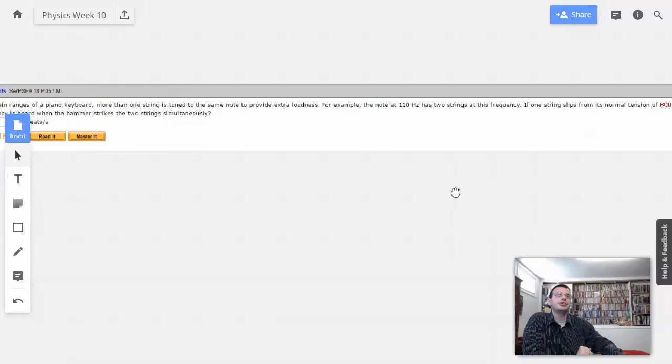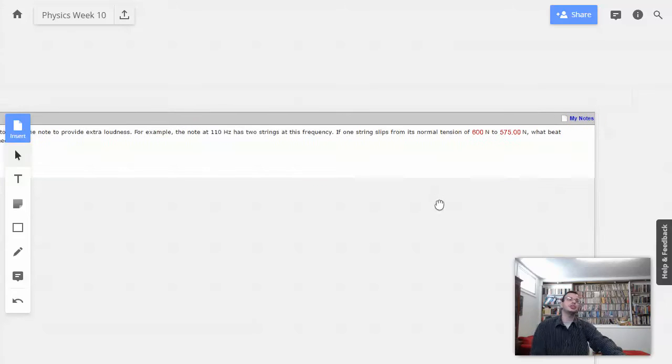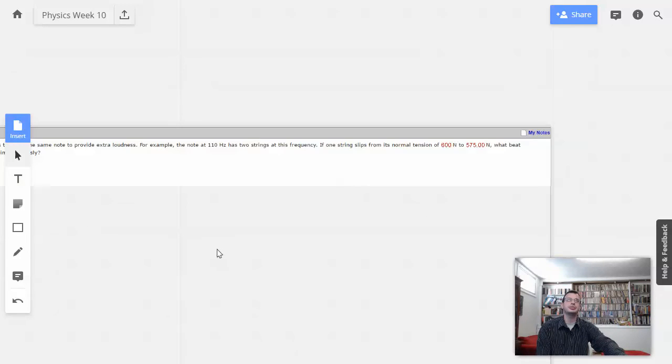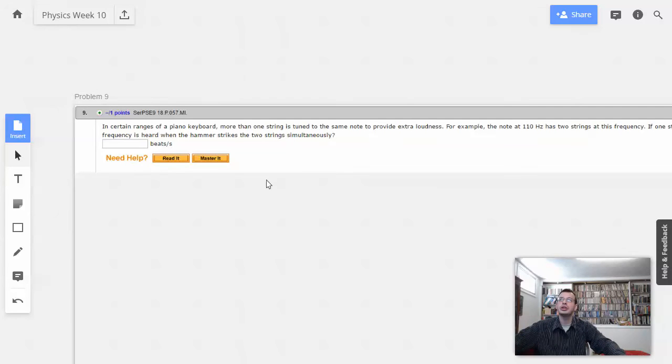For example, the note 110 hertz has two strings at this frequency. If one string slips from its normal tension of 600 to 575 newtons, what beat frequency is heard when the hammer strikes the two strings simultaneously?